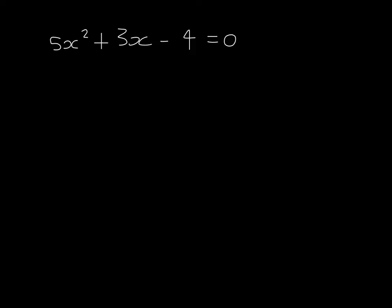Here's the second example, this time a little bit trickier. We will factorise out the 5 from just these first two terms. So we have 5 bracket x squared plus 3 fifths x staying in fractions. Take away 4 equals 0.